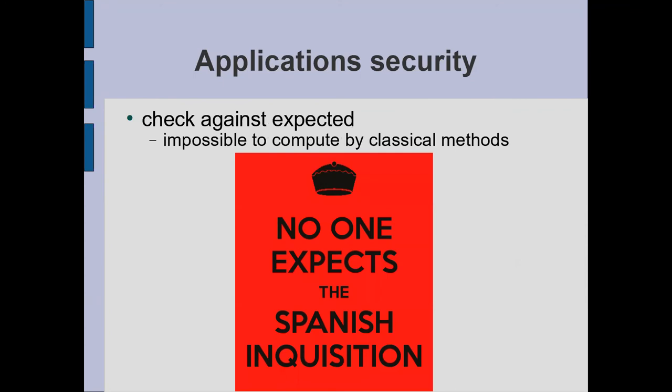Traditionally we say check the output against what you expected. Well, with a lot of these artificial intelligence things, what did we expect? The reason we're doing them is because we wanted to get results that we didn't expect. And so when we get quantum computing in there and start looking at those results, how are we going to check them? Those things are going to be impossible to compute by classical methods, and so how are we going to test whether or not this is actually working?